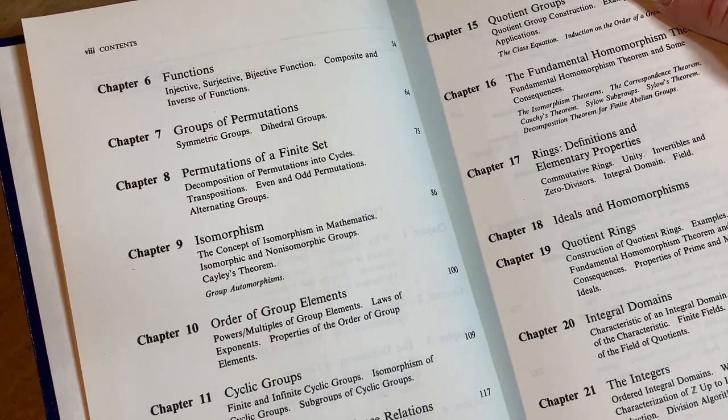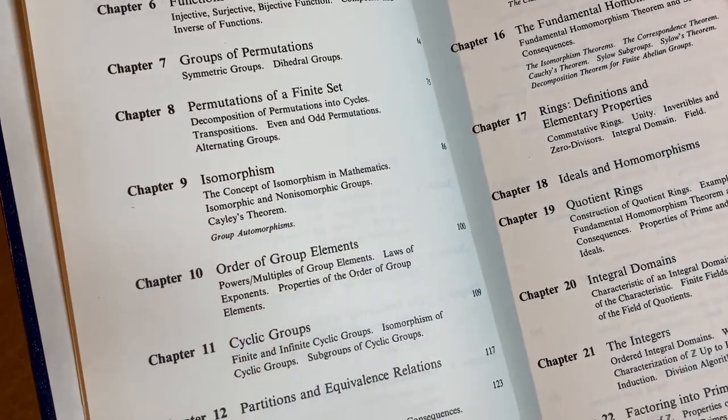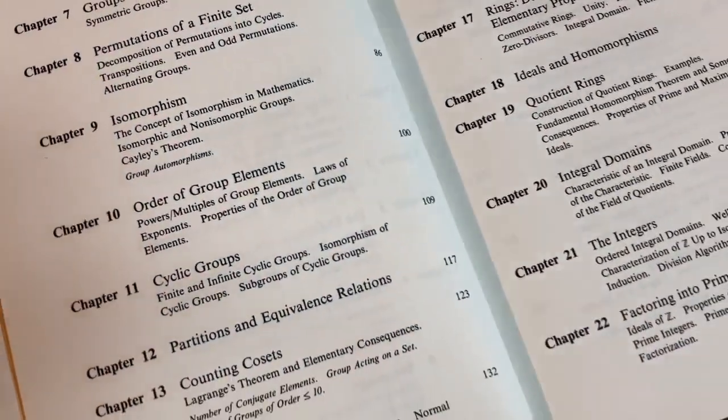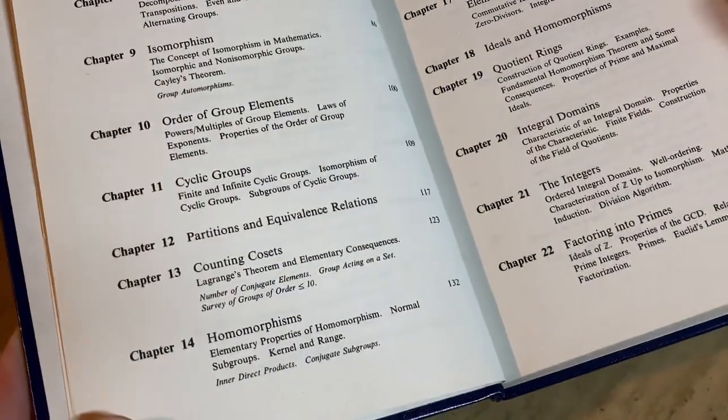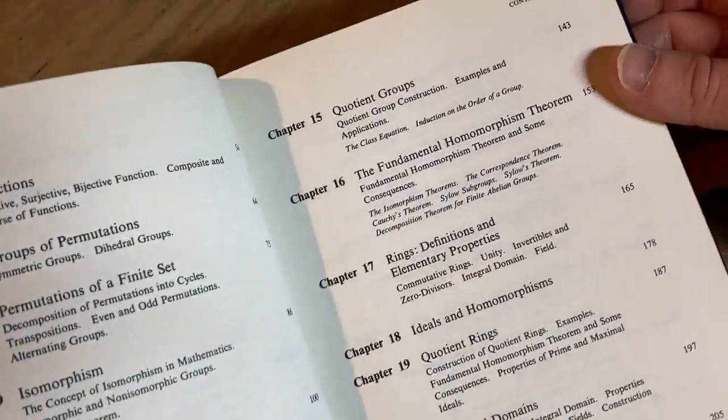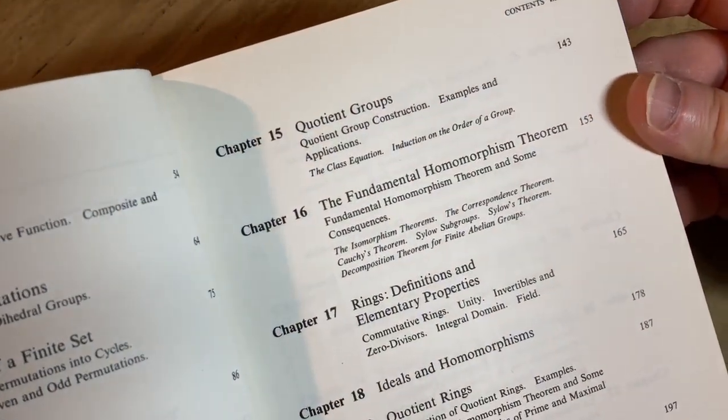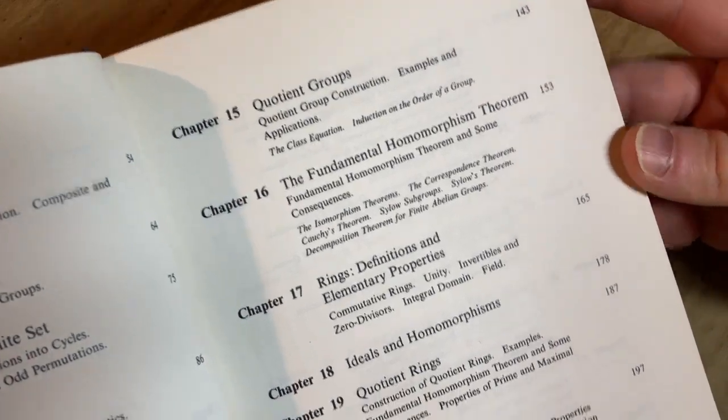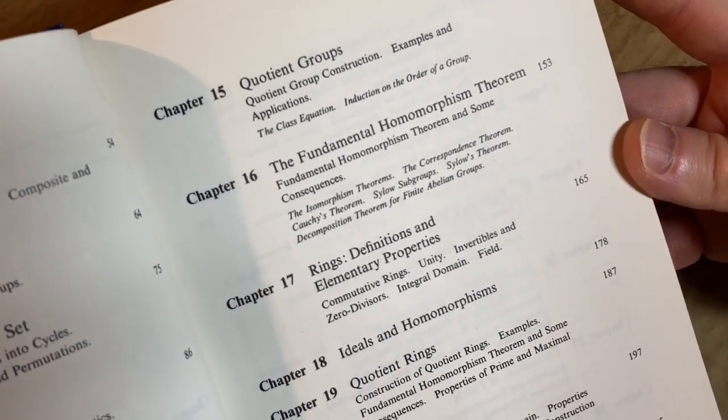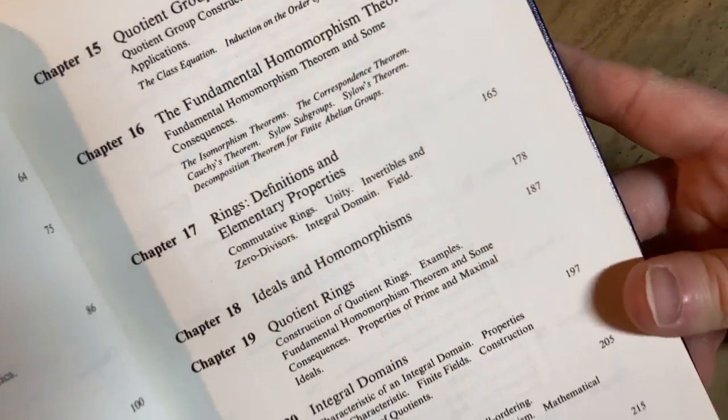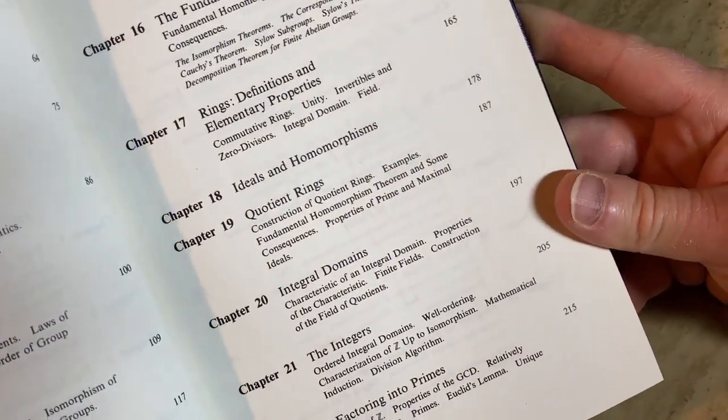Groups of permutations. Permutations of a finite set, isomorphism, order of group elements, cyclic groups, partitions and equivalent relations, and then counting cosets and then homomorphisms. We have quotient groups, the fundamental homomorphism theorem. Rings, definitions and elementary properties, ideal and homomorphisms, quotient rings, integral domains.